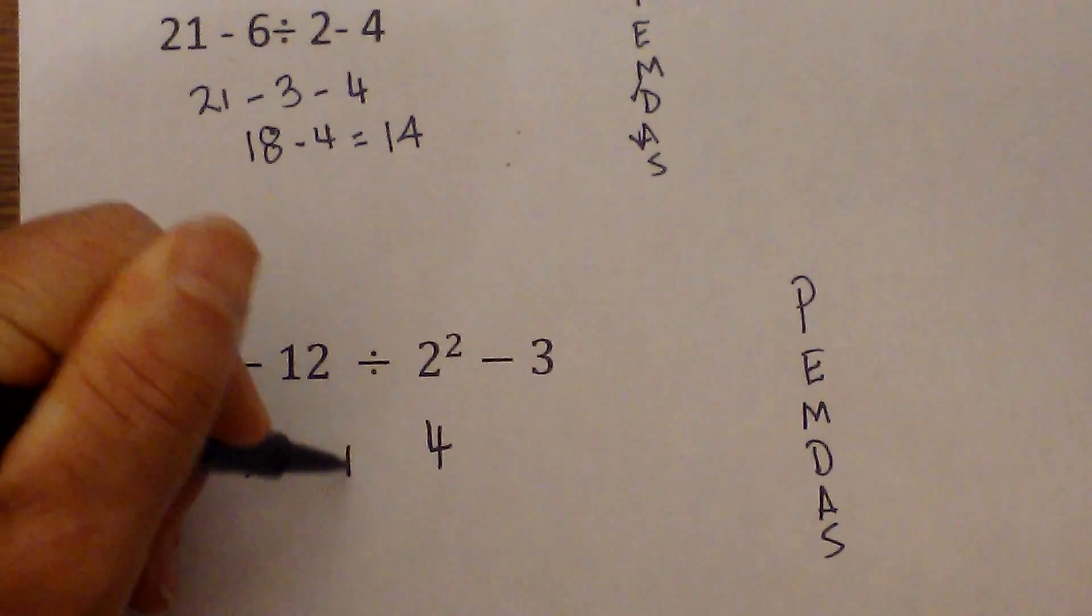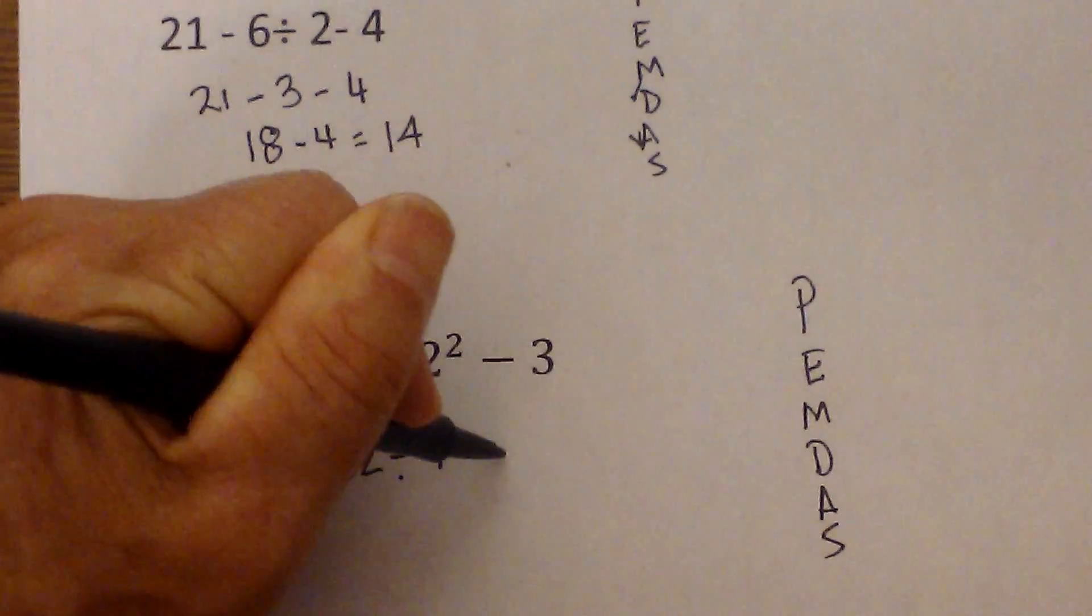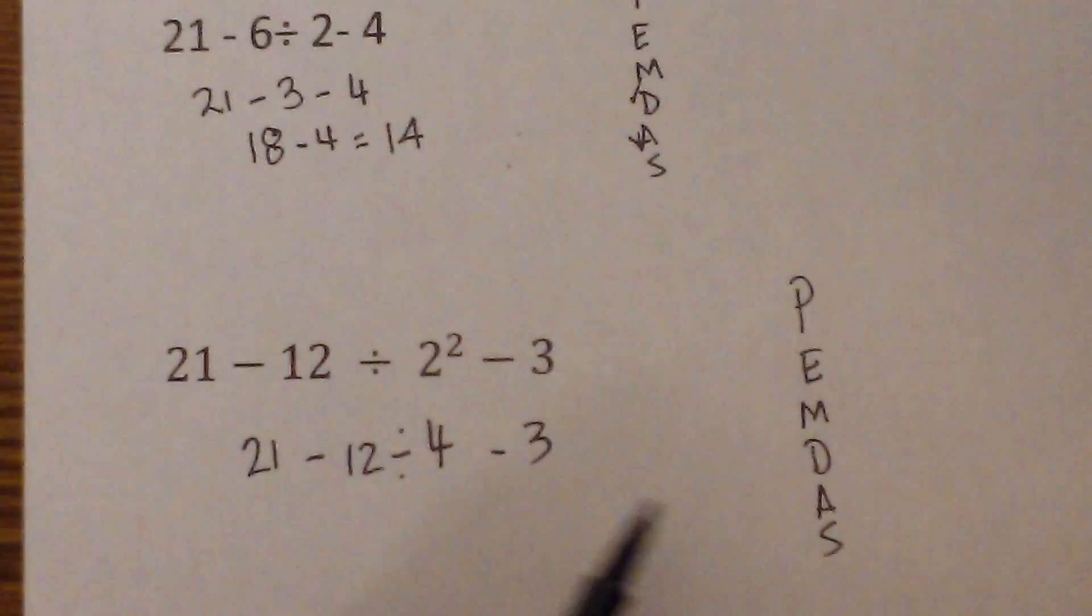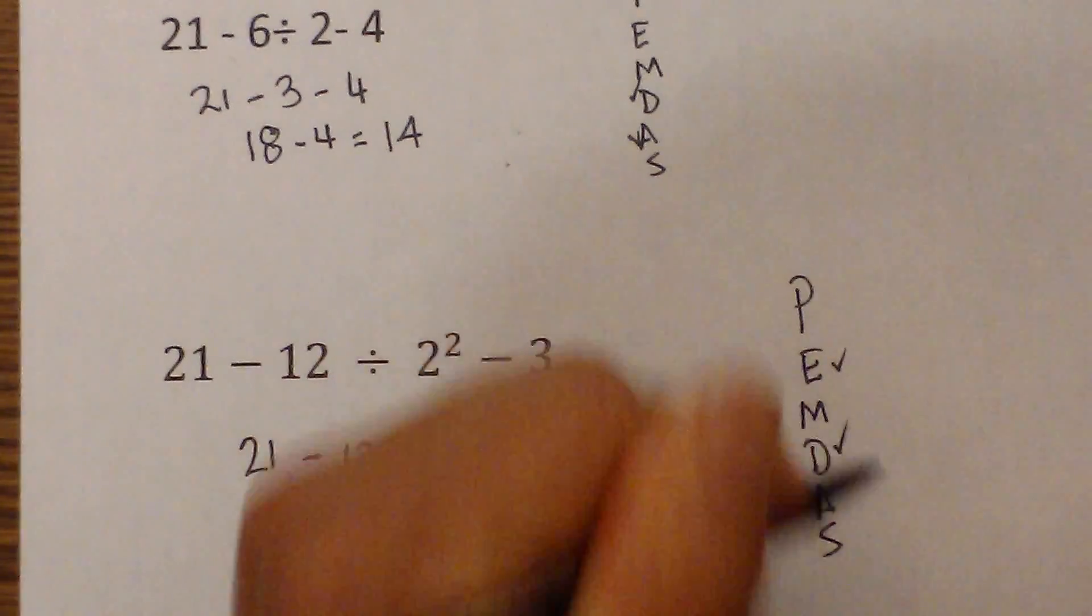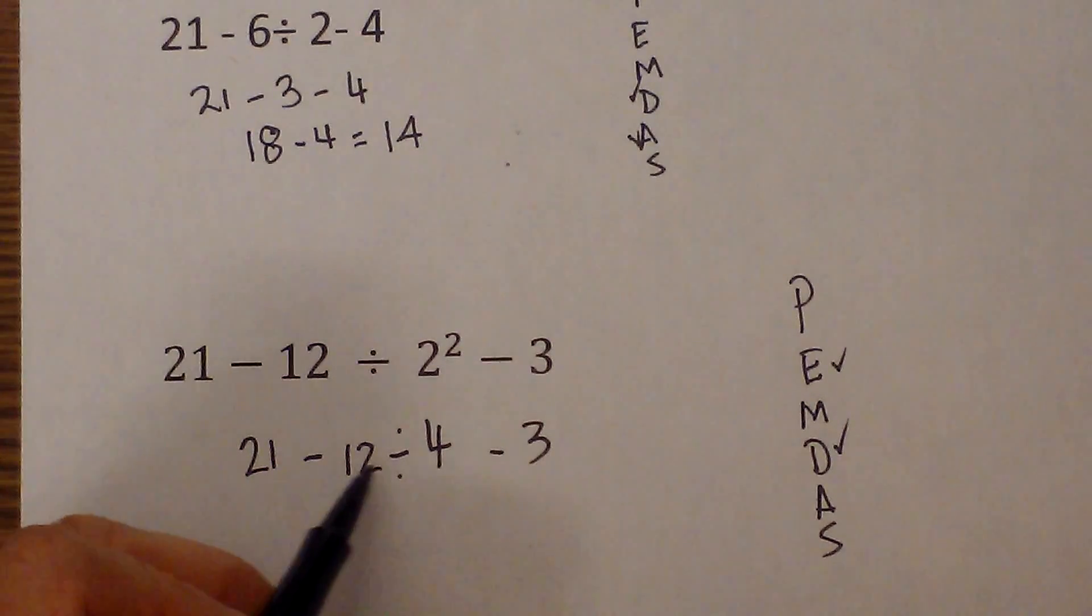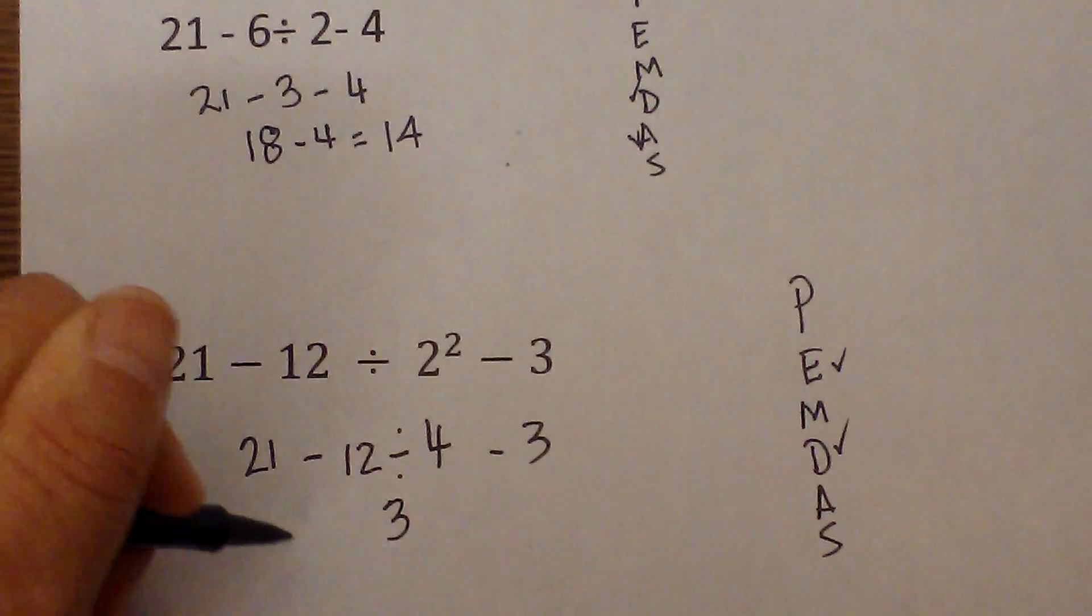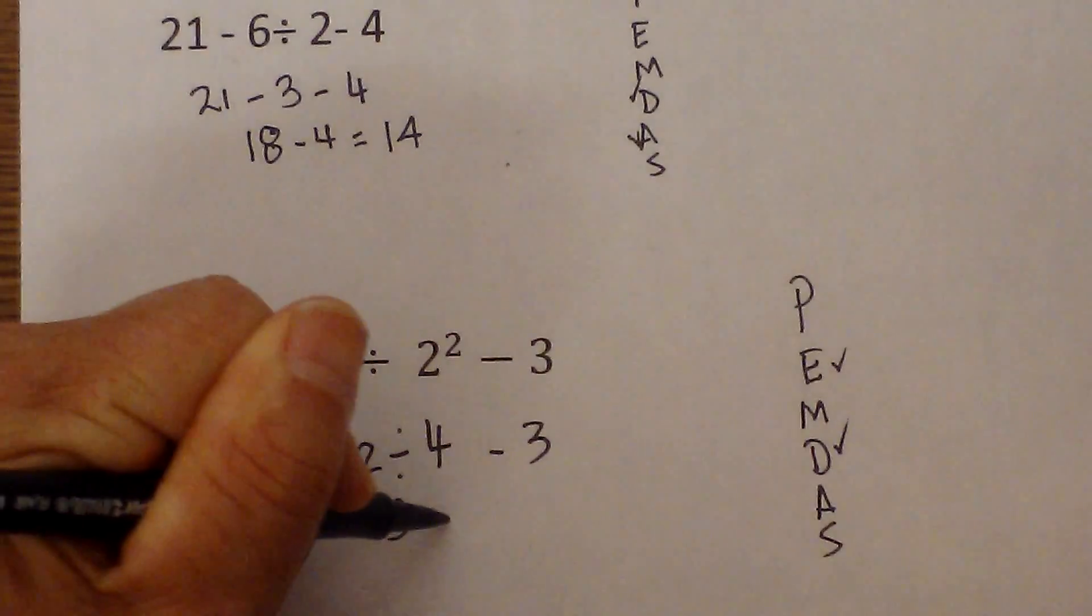I'm going to go ahead and bring everything down. This one's a little tricky. Next, do we have... So we've done exponents. Multiplication? No. Division? Yes. 12 divided by 4 is 3. So now I'll bring everything down.